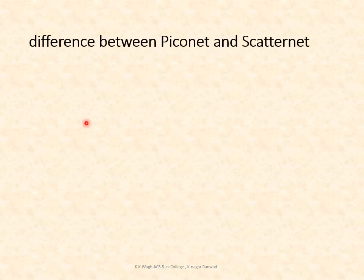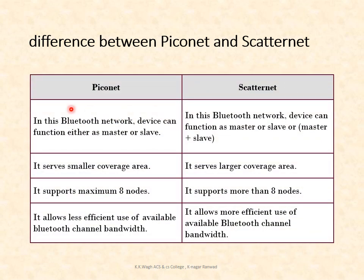The difference between PicoNet and ScatterNet: In a PicoNet, a device functions as either master or slave, while in a ScatterNet a device can function as both master and slave. PicoNet covers a smaller area while ScatterNet covers a larger area. PicoNet supports a maximum of 8 nodes, while ScatterNet supports more than 8 nodes since it is a combination of two or more PicoNets. PicoNet allows less efficient use of available Bluetooth channel bandwidth, whereas ScatterNet allows more efficient use.